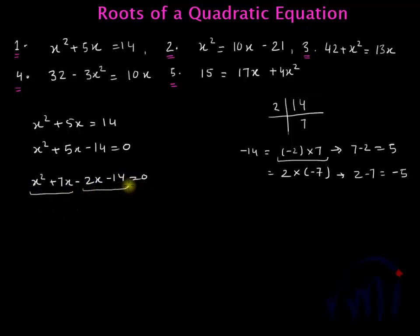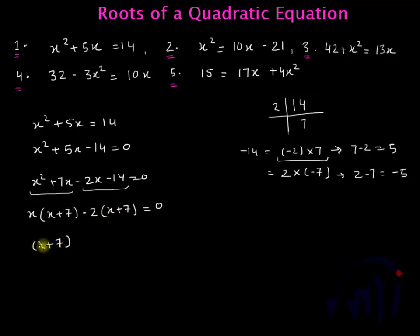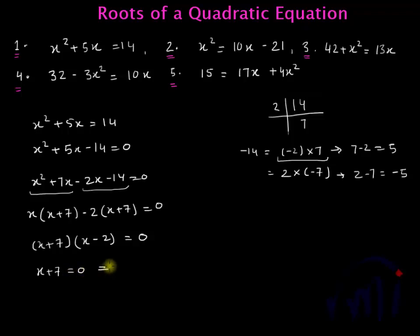So this can be written as x squared plus 7x minus 2x minus 14 is equal to 0. Making two groups: from the first group, taking x common gives x plus 7 inside the bracket. We intend to get the same term inside both brackets. Taking x plus 7 common from both terms leaves x minus 2, giving x plus 7 multiplied by x minus 2 equals 0. So either x plus 7 equals 0, giving x equals minus 7, or x minus 2 equals 0, giving x equals 2.